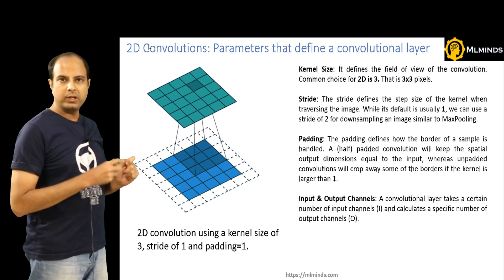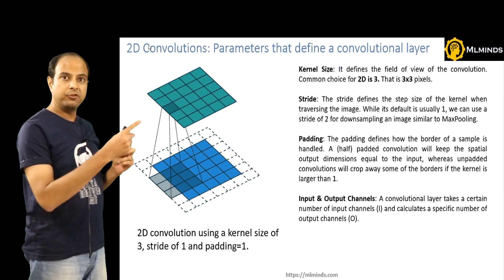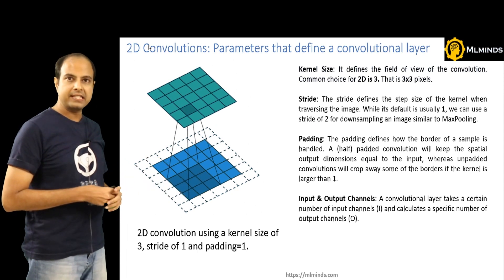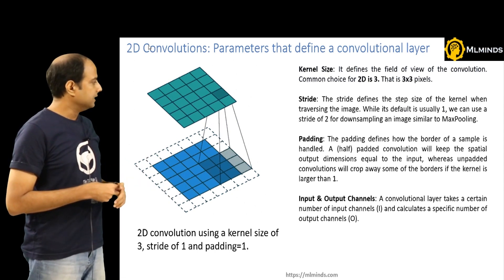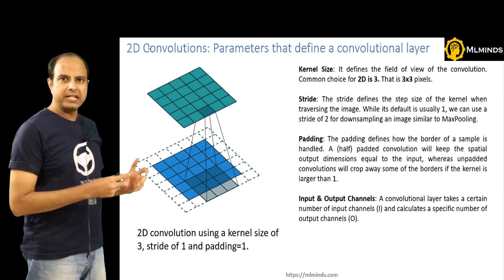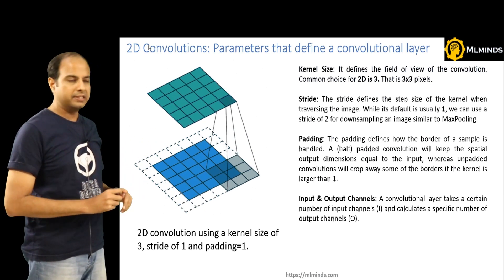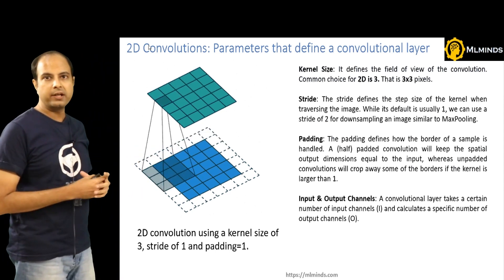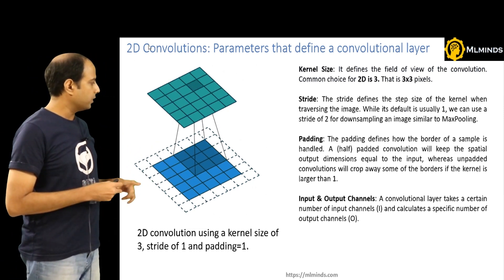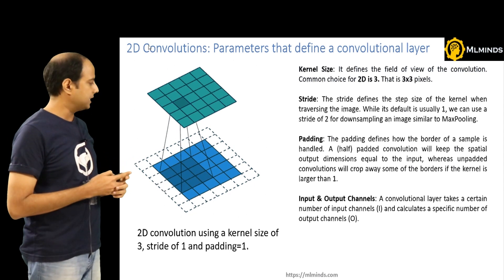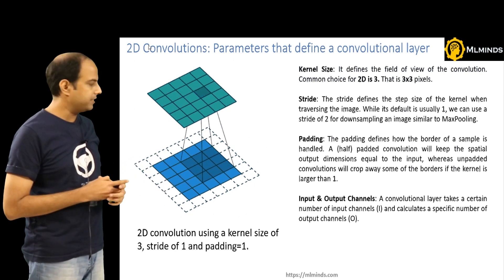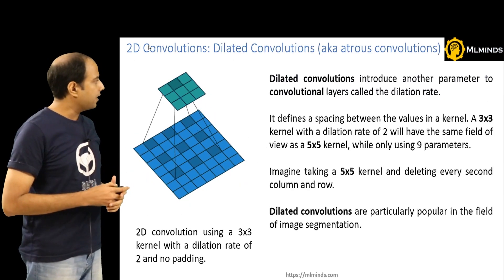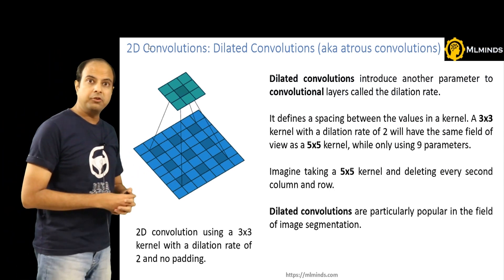Notice that the filter is moving one step at a time, both from left to right and from top to bottom, so the stride is one. The kernel size is 3×3. The number of input and output channels is set to one — the input has one channel, and since we're using only one filter, we get one output channel. So this is a typical 2D convolution with kernel size 3, stride 1, pad 1, and one input channel.